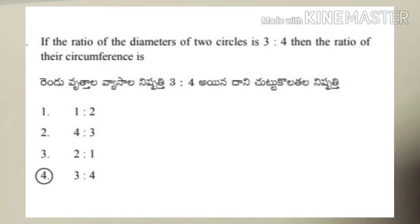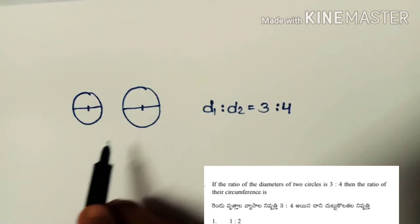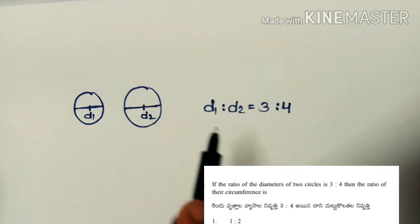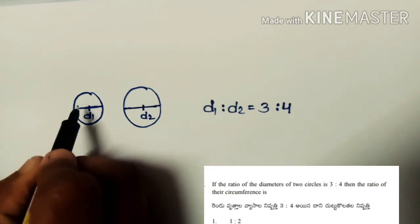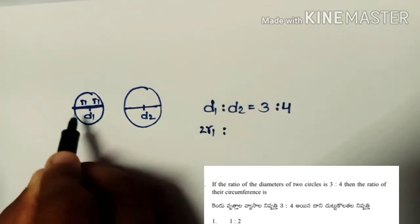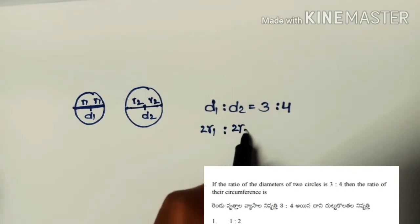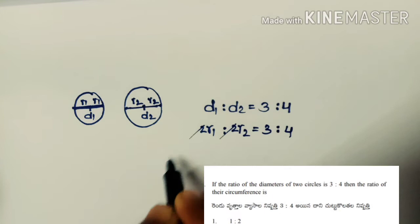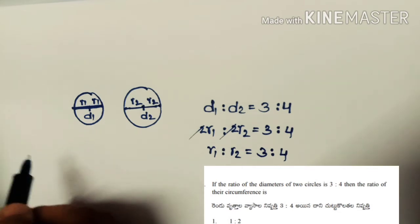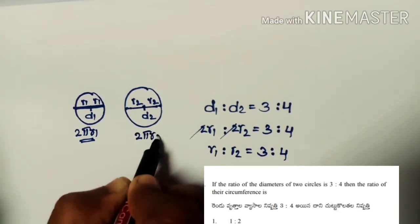Next problem: if the ratio of diameters of two circles is 3:4, find the ratio of their circumferences. Given d₁:d₂ = 3:4, and since d = 2r, we have 2r₁:2r₂ = 3:4, so r₁:r₂ = 3:4. Circumference of first circle = 2πr₁ and second = 2πr₂.